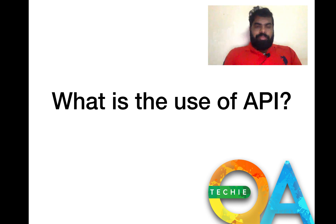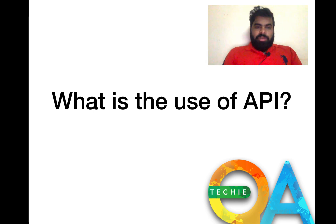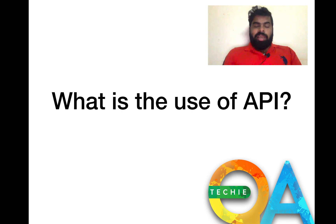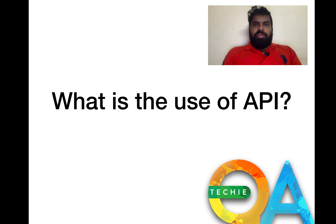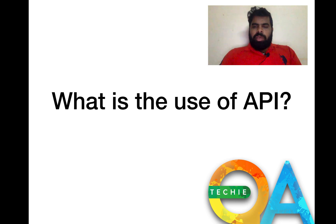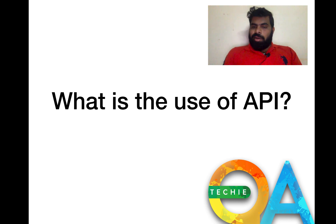The use of API: in any application, data transfers from backend server to frontend through API. If you're integrating a third party or giving data access to a third party, everything happens through API. We can restrict data based on role or usage without giving direct database access. For example, if someone wants users aged 18 to 25, we can create an API that restricts and returns only that data.